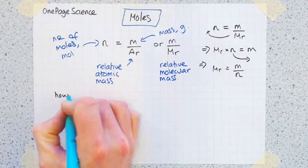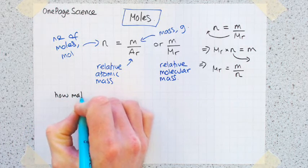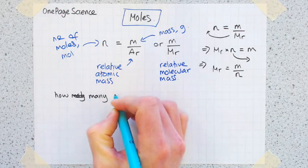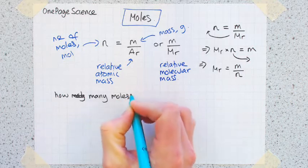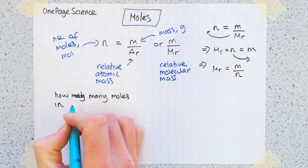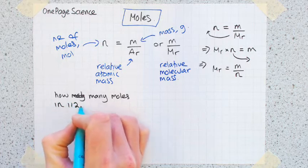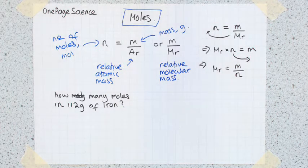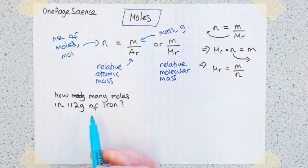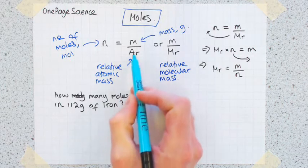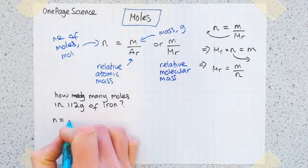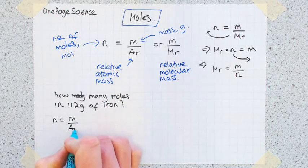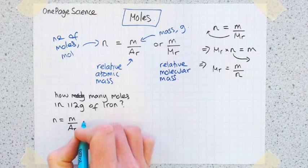You might be asked a question like this: how many moles in 112 grams of iron? So we know we've got 112 grams, we know we've got iron, so we're using this equation. Write out the equation: n equals m over - this time it's an atom - so we need Ar.